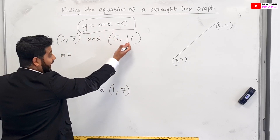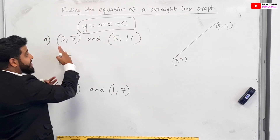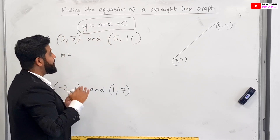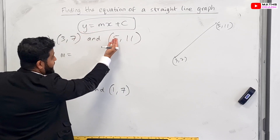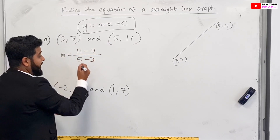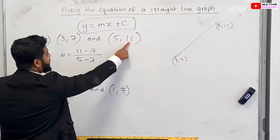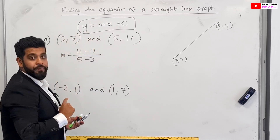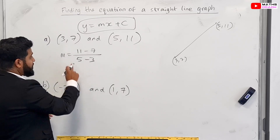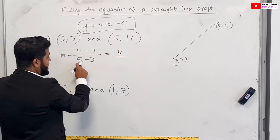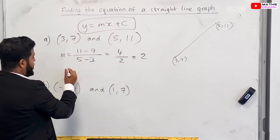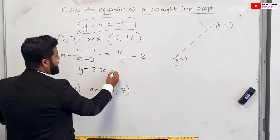So m equals the difference in y over the difference in x. It doesn't matter which order you subtract, so you could do 7 minus 11, but then you'd have to do 3 minus 5 for the denominator. I'm going to choose 11 minus 7 divided by 5 minus 3. What you cannot do is subtract one way for y and the other way for x — you must stay consistent. So 11 minus 7 gives 4, and 5 minus 3 gives 2, so 4 divided by 2 is 2. Our gradient is 2, giving us y = 2x + c.